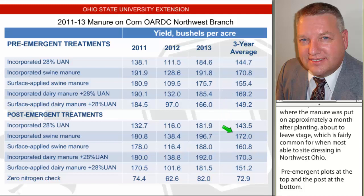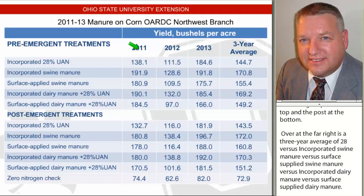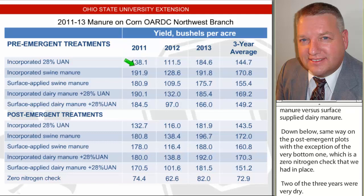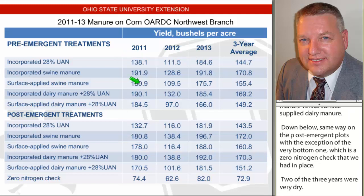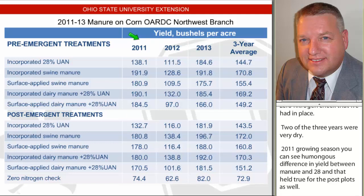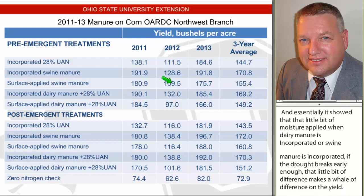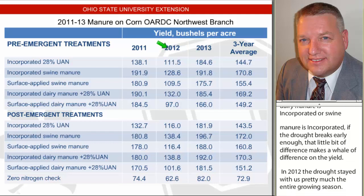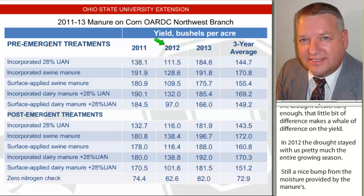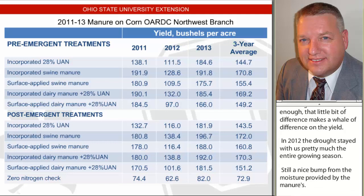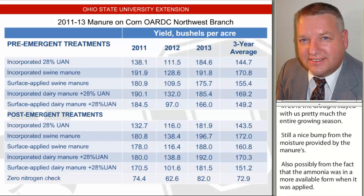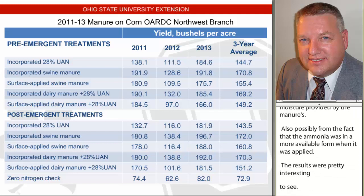Two of the three years were very dry. The 2011 growing season shows a humongous difference in yield between the manures and the 28% UAN, and that held true for the post plots as well. It just showed that that little bit of moisture applied when dairy or swine manure is incorporated — if the drought breaks early enough — makes a real difference on yield. In 2012, the drought stayed with us pretty much the entire growing season. There was still a nice bump from the moisture provided by the manures and also possibly from the fact that the ammonia was in a more available form when applied. The purpose is to show farmers the potential that manure has, if we could put it on a growing corn crop instead of applying it late in the fall. Dry seasons really favor manure.